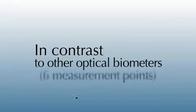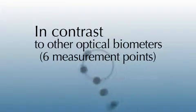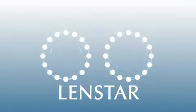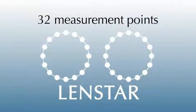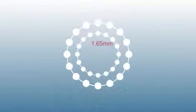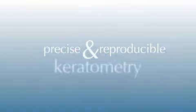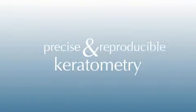In contrast to the other optical biometer, which utilizes six measurement points on one concentric ring at about 2.5 millimeters, LENSTAR utilizes 32 measurement points placed on two concentric rings of 16 points each at 1.65 millimeters and 2.3 millimeters, to ensure precise and extremely reproducible keratometry.